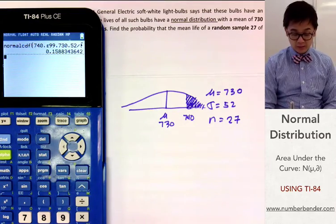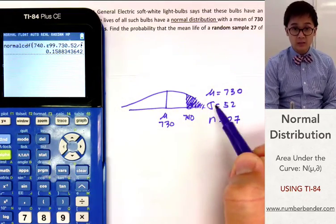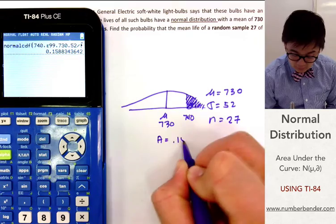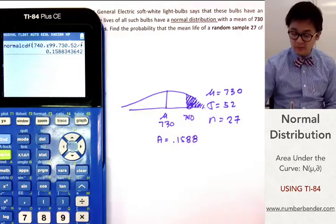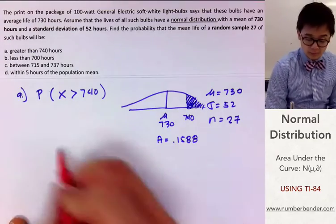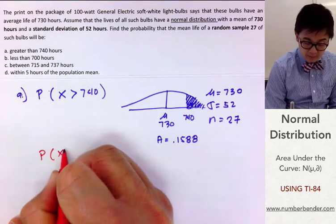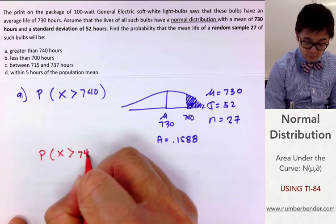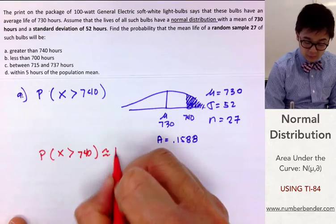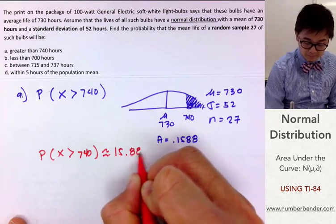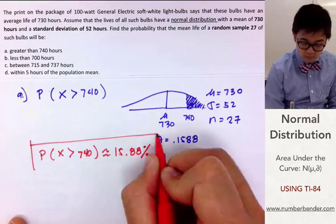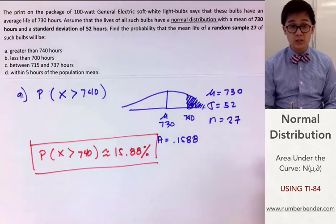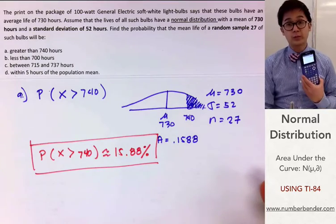Using the calculator, it generates the approximated area under the normal curve, which is 0.1588. So the area is 0.1588, which means the probability that the mean life of the bulbs will exceed 740 hours is approximately equal to 15.88%. That's how quickly you can find the area under the curve using the TI-84.